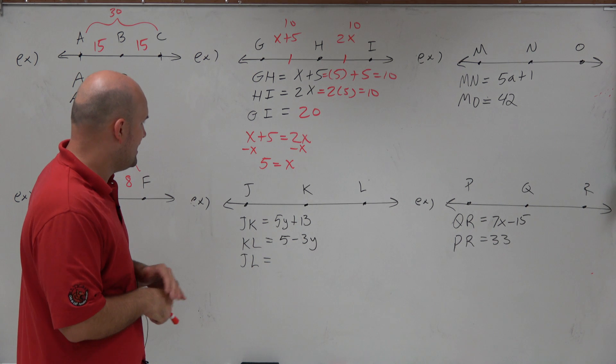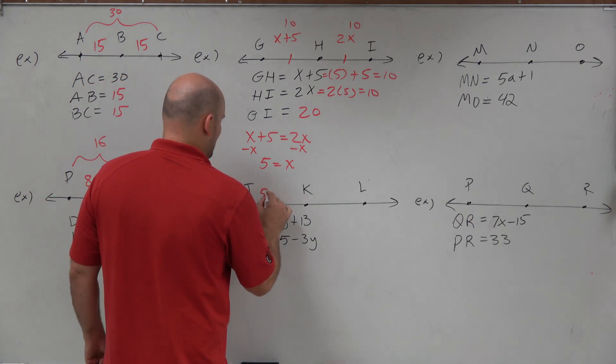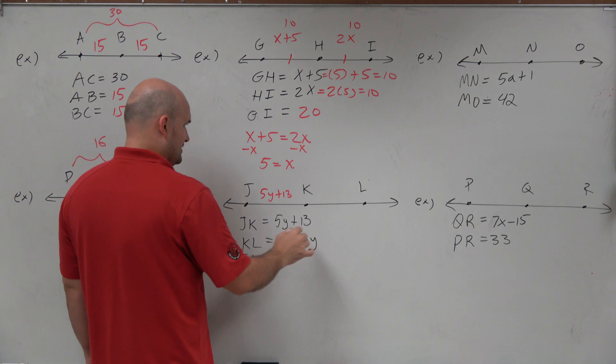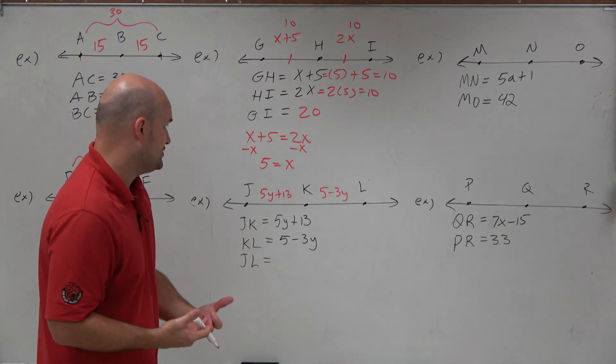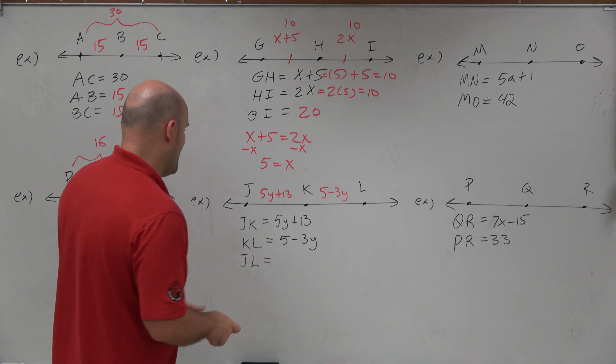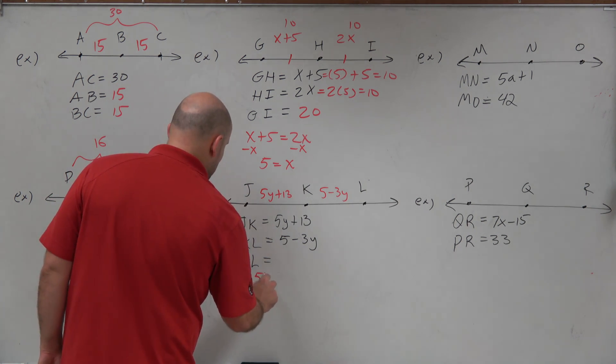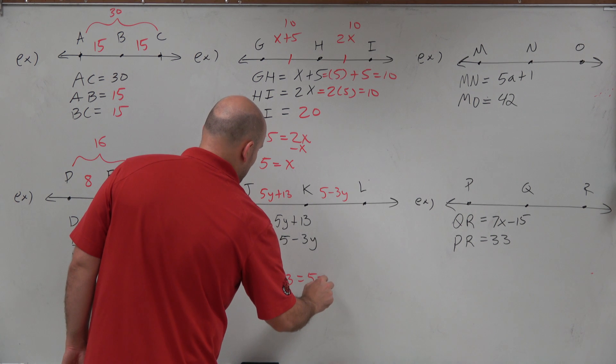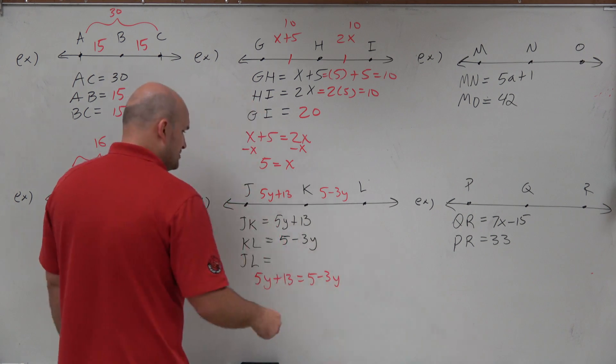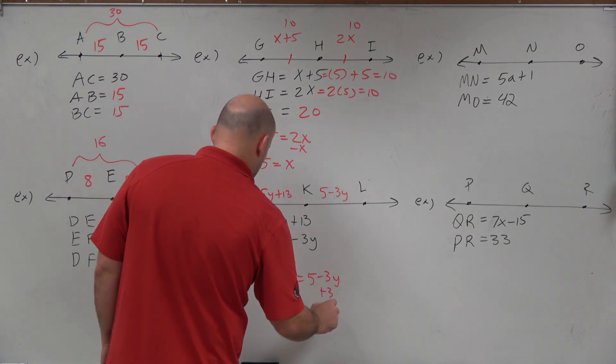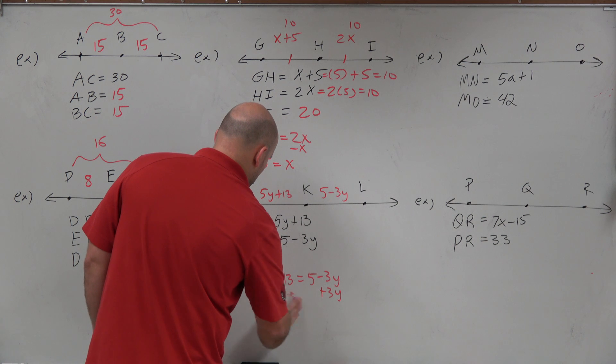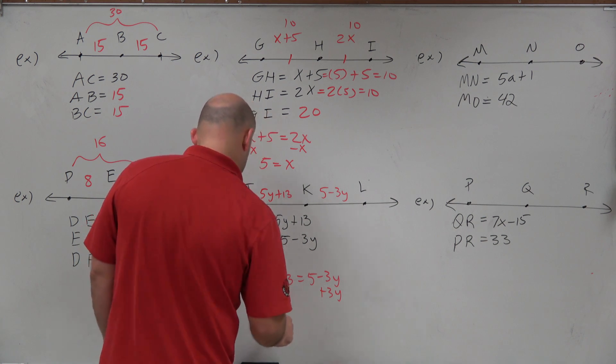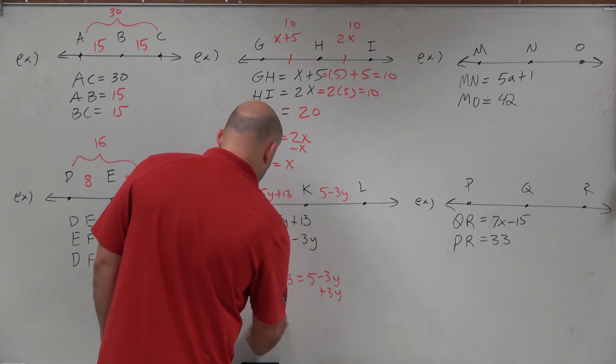All right. So in this case, again, we have JK is 5y plus 13. KL is going to be 5 minus 3y. Now basically, what we need to do is go ahead and solve for y. So we'll set up another equation like we did in the last one. 5y plus 13 equals 5 minus 3y. And then we'll just basically go ahead and solve for y. So I'll add 3y. So I have 8y. And then I'll subtract a 13.